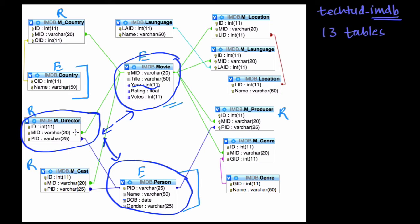So for the movies released in 2010 with rating greater than 7, we first list the title and PID. Once we have the title and person ID listed, we can then use that person ID to fetch the person's name. Let's first list down the title and PID as step one.